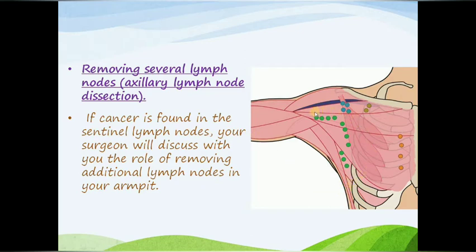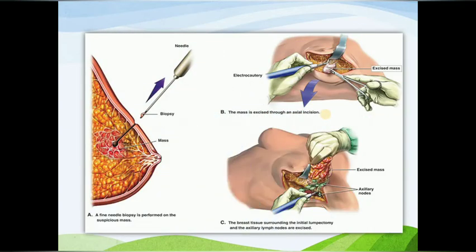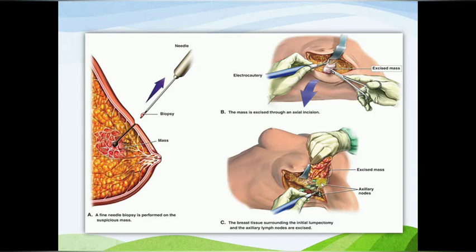These are the lymph nodes which are present in your armpit. This is the axillary dissection — first a biopsy of the breast tissue is taken, then if cancer is suspected an incision is made in the armpit and all axillary lymph nodes are removed.